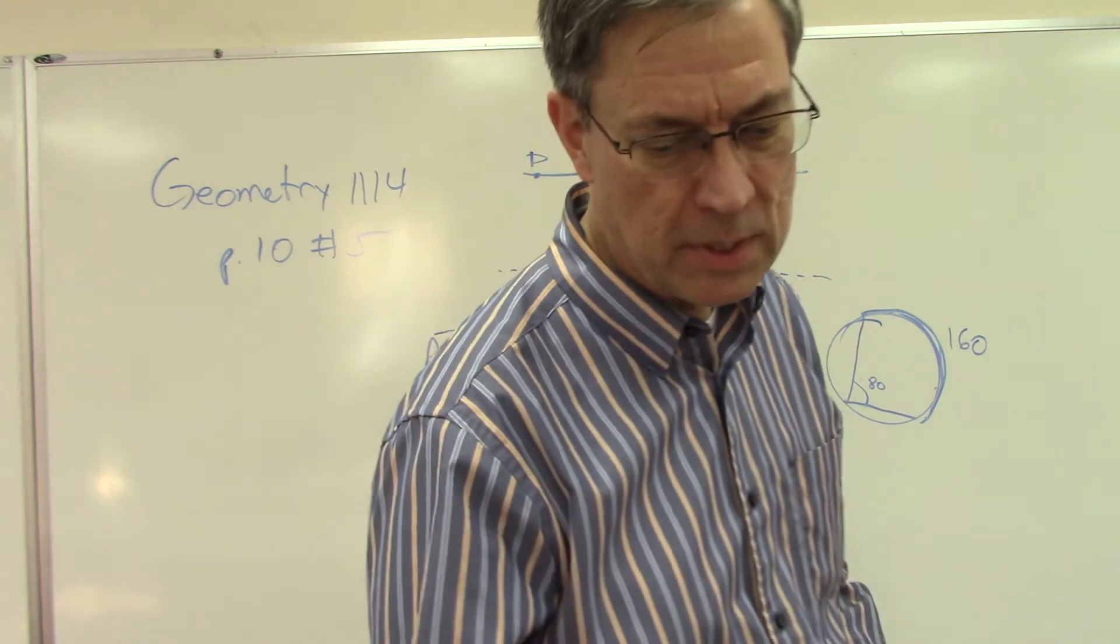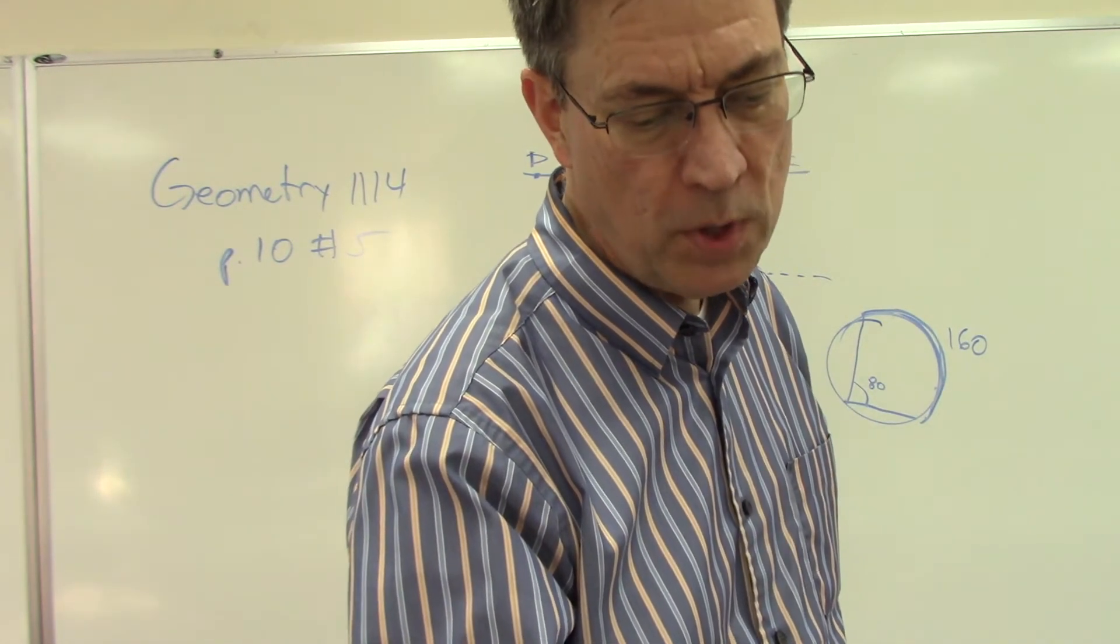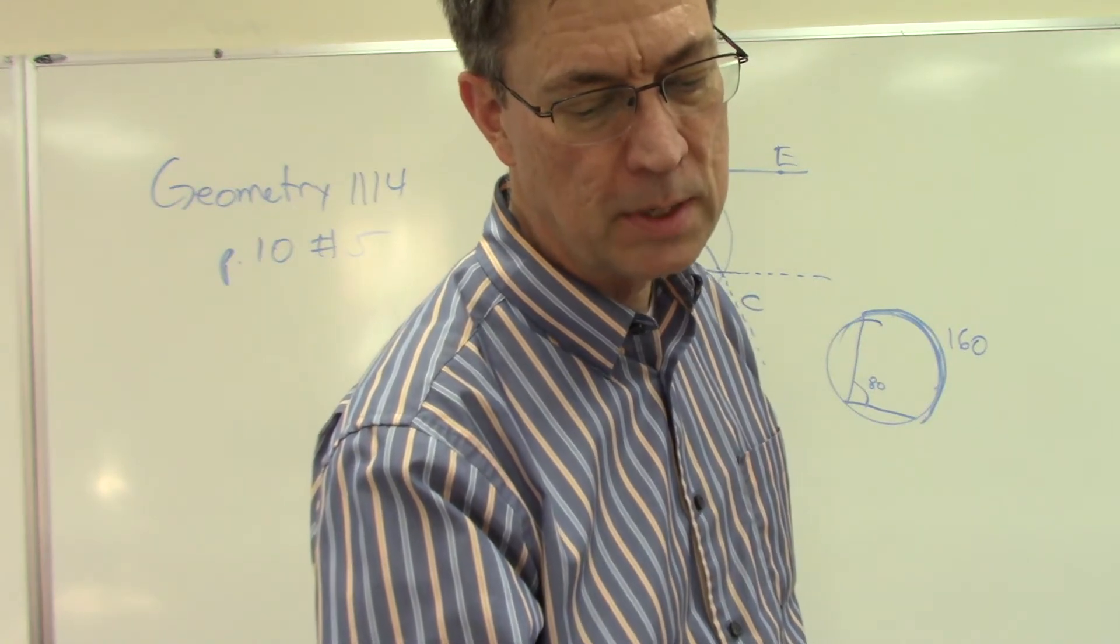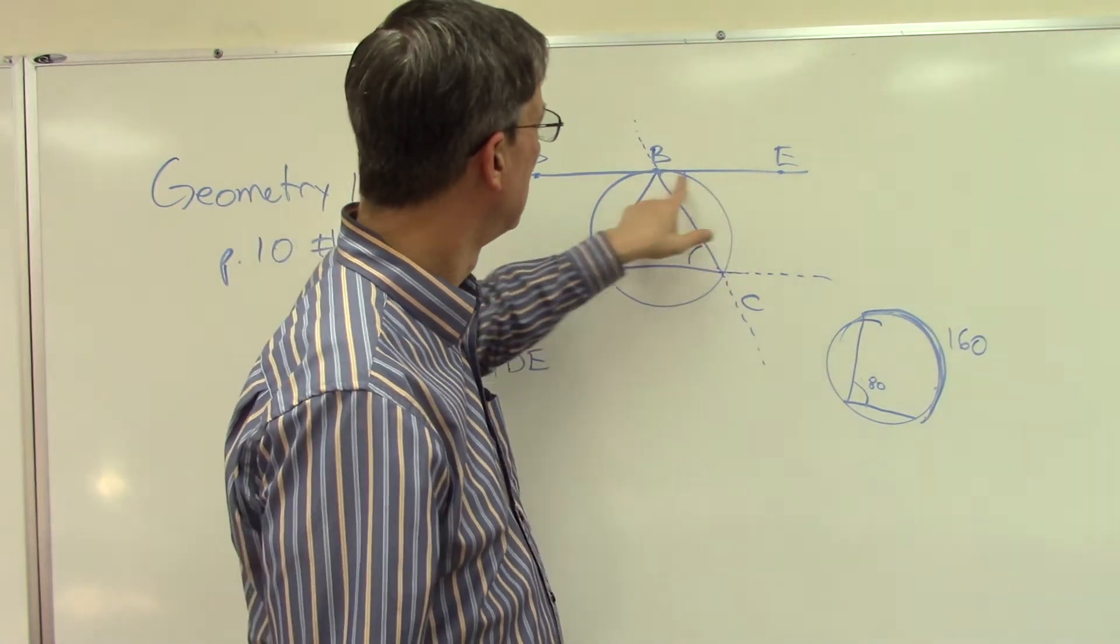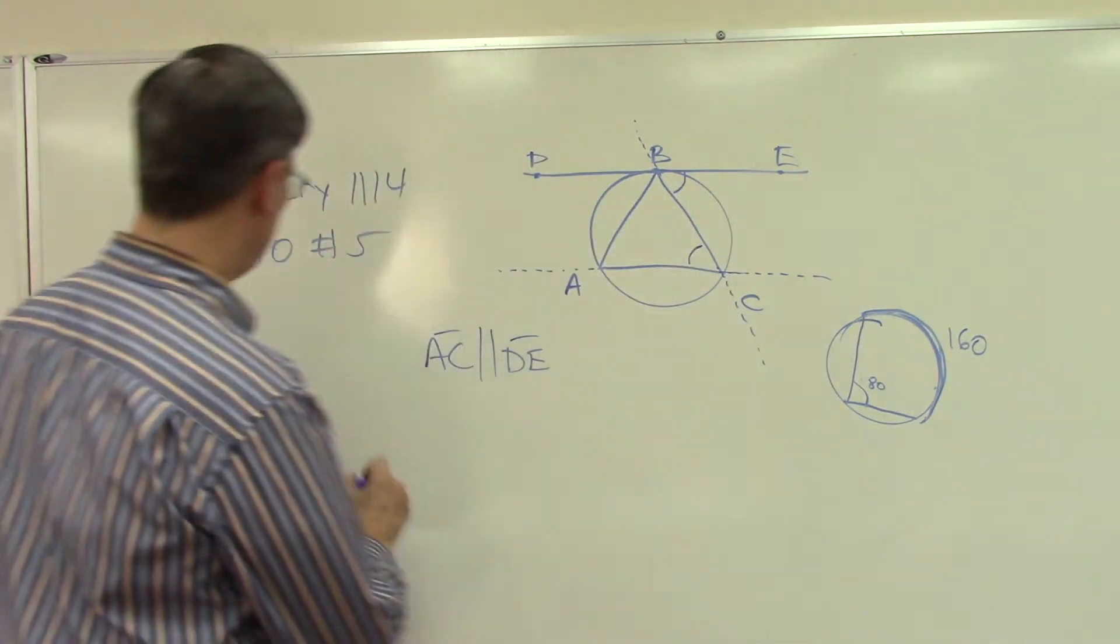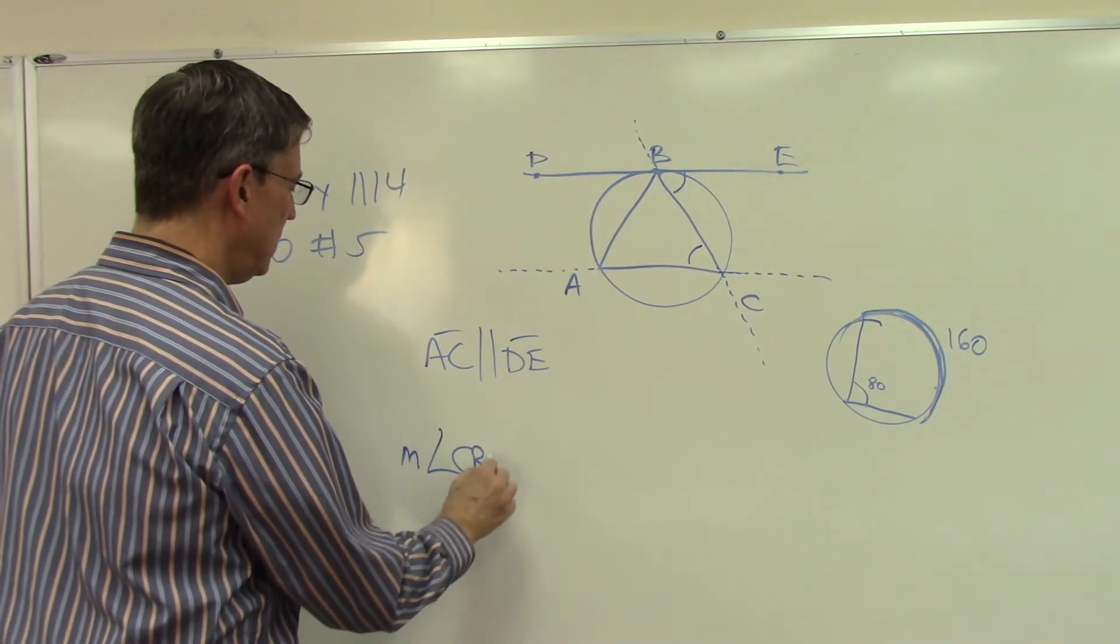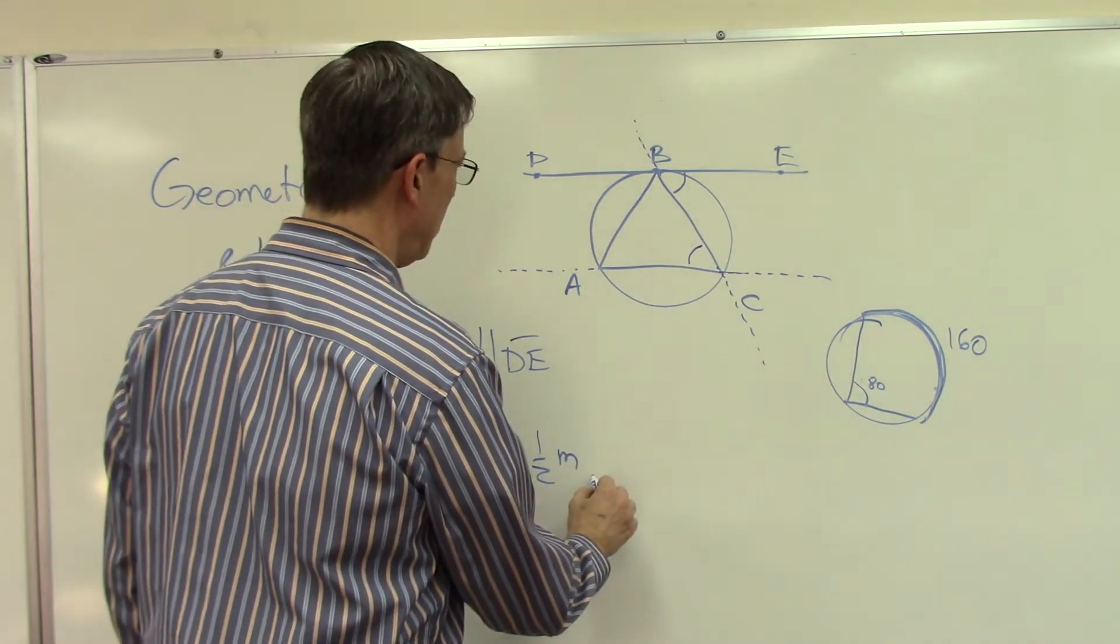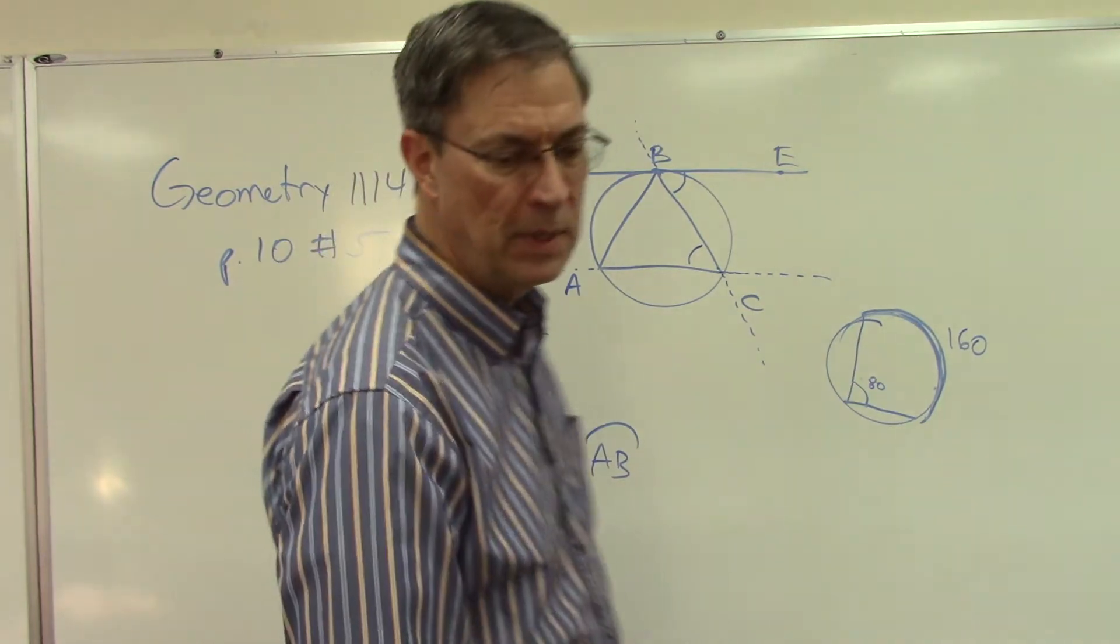What else do they give us here? Do they give us something about, well, they want us to prove that angle CBE. Okay, that's where we're headed. We're trying to prove that the measure of this angle here. So here's where I'm proving. The measure of angle CBE is equal to one-half the measure of arc AB. Did I write that down right?